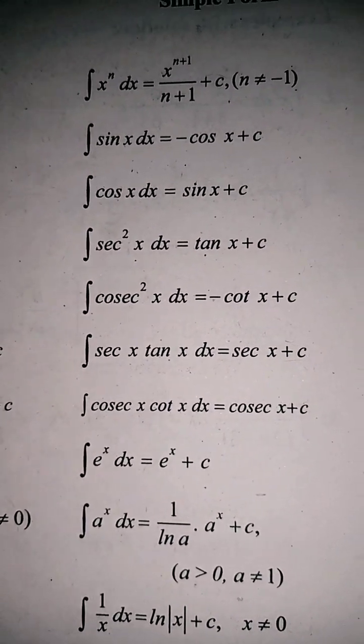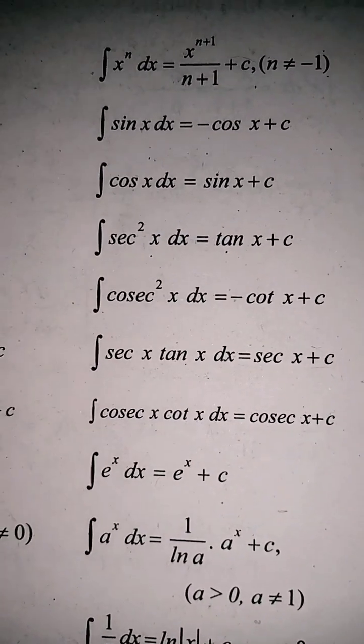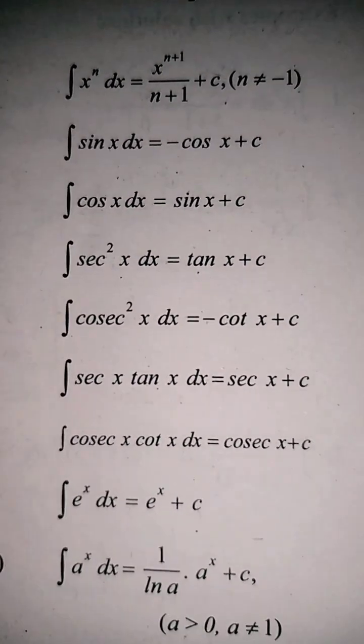c is the constant here. The integration of secant square x is tan x plus c, because of the identity 1 plus tan square x equals secant square x.